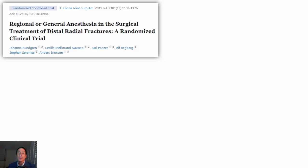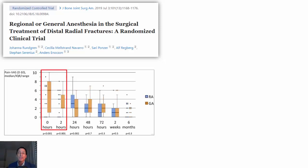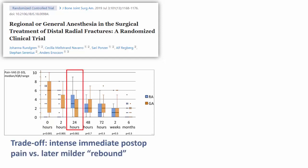A more recent RCT comparing regional and general anesthesia for distal radial fractures demonstrates this well. The general anesthesia group had a median pain score in the PACU of 6 out of 10, whereas the regional group was basically free of pain in the early postoperative period. Although it looks like the authors did not capture the point at which the block wore off, we see that at 24 hours, although the difference in pain intensity is statistically significant in favor of the GA group, the absolute pain is not terrible. And thereafter, both groups do equally well.